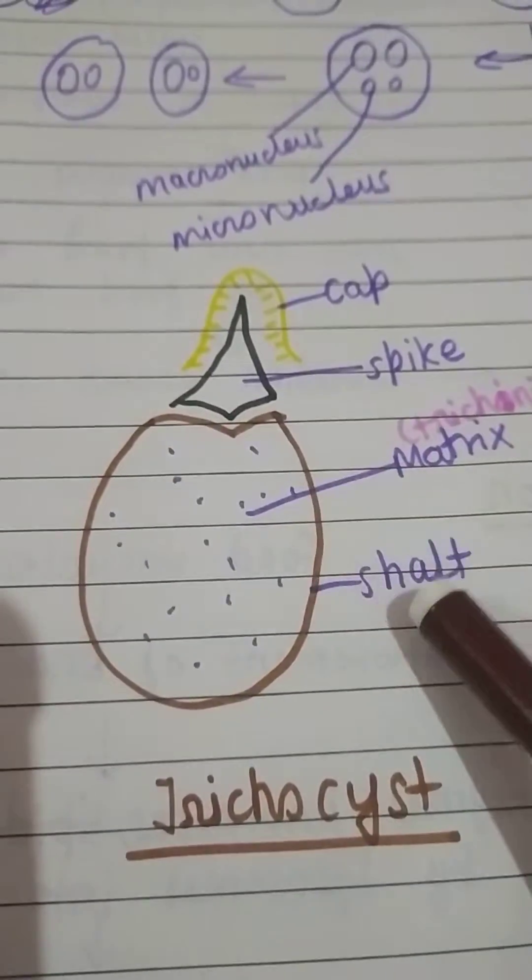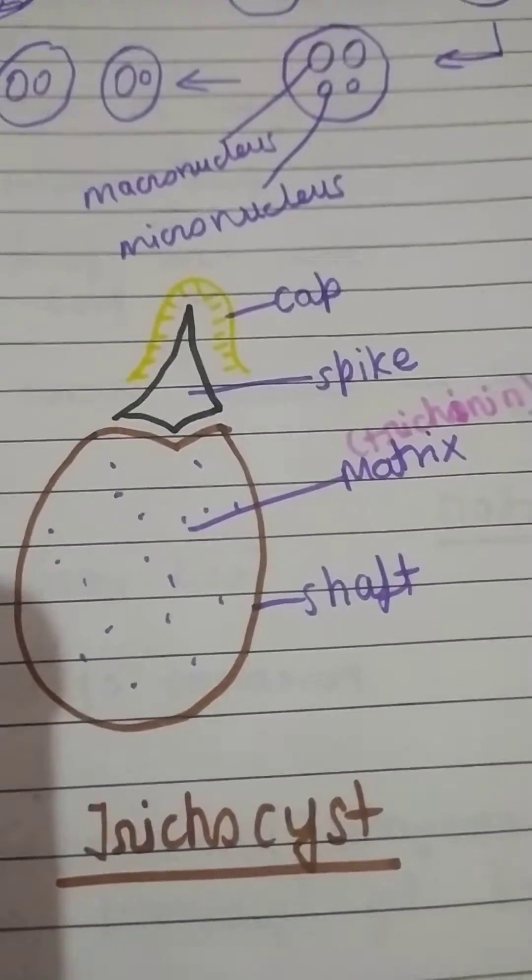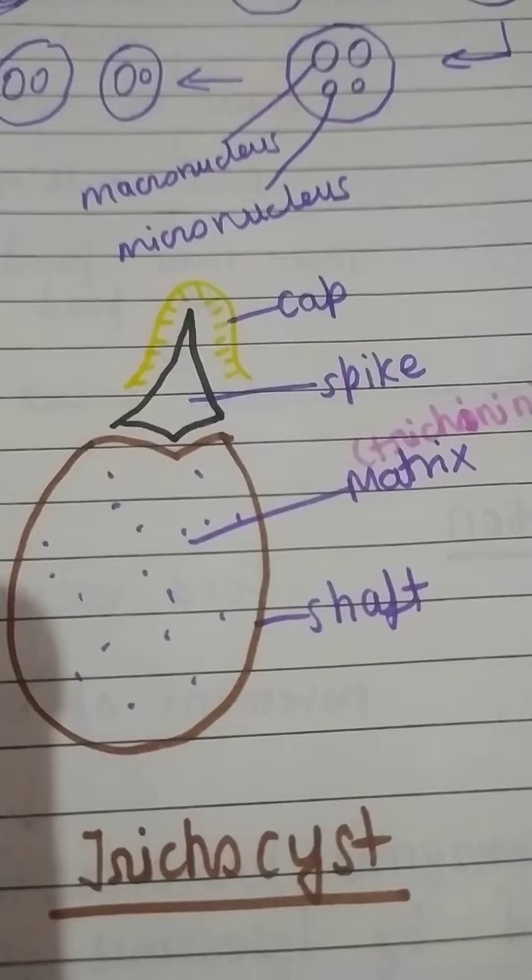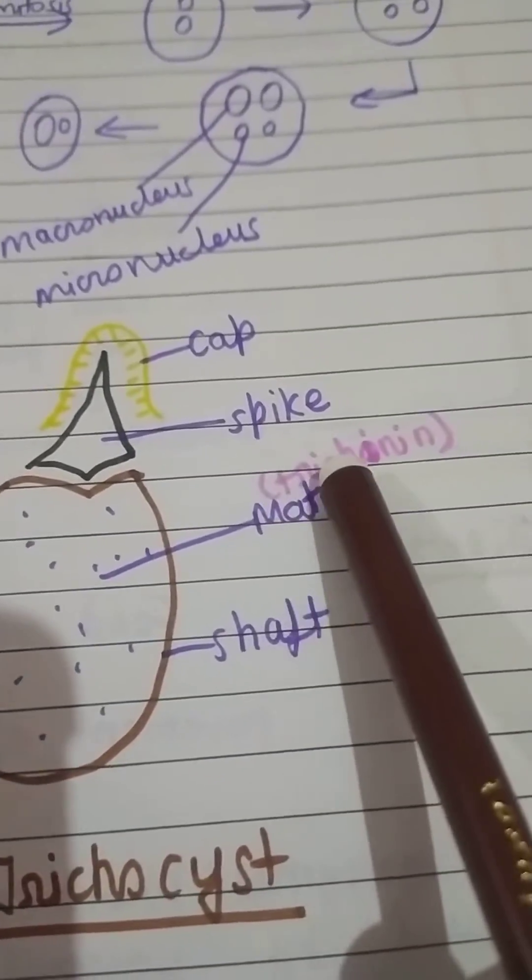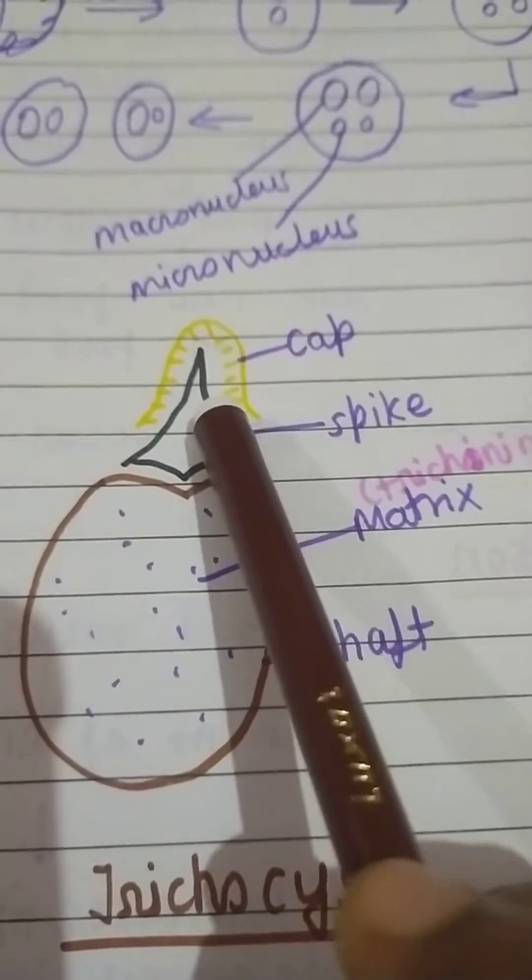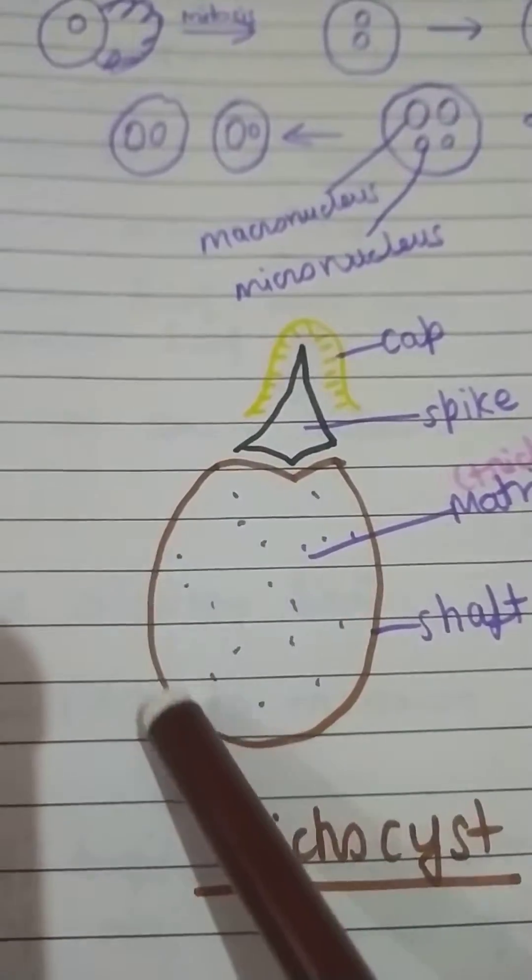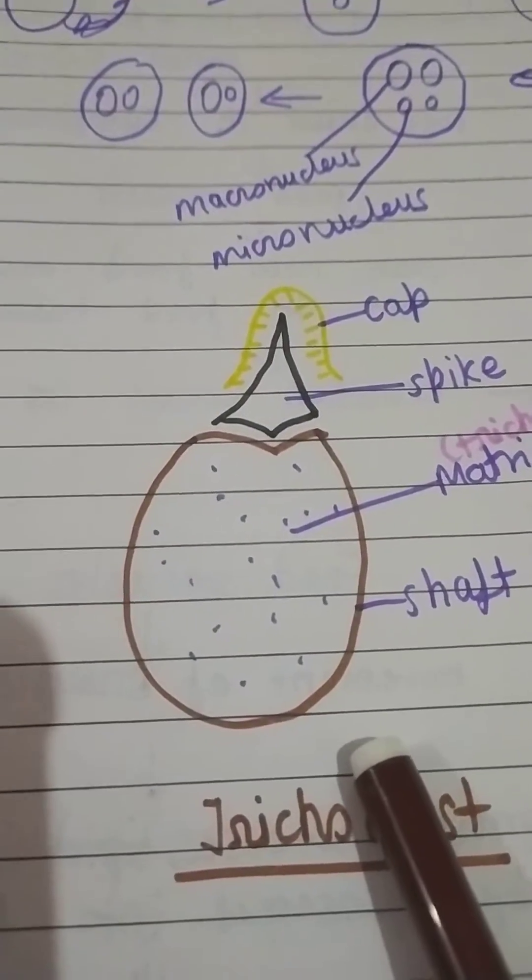After this it is filled by a matrix. The matrix which is present is known as trichinine. And in its upper side there is spikes. After that spike there is a cap. And this is the diagram of the trichocyst. Thank you.